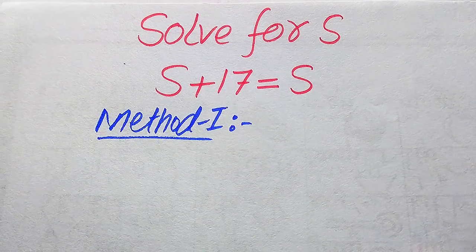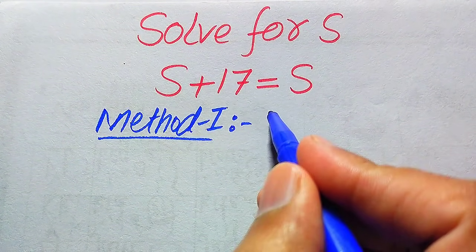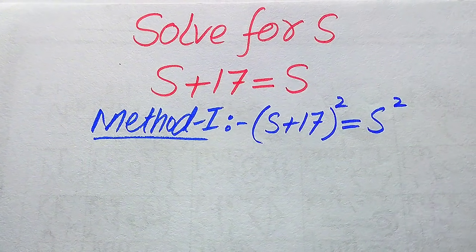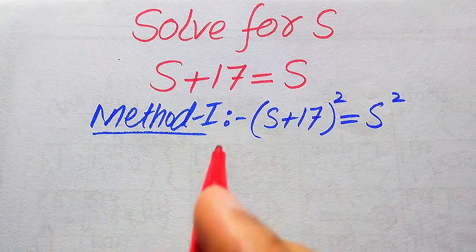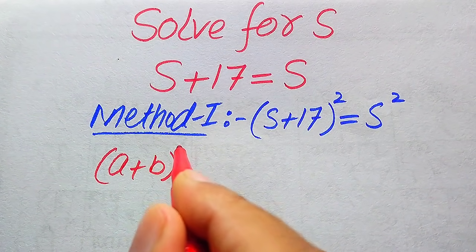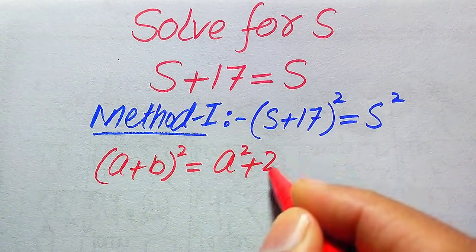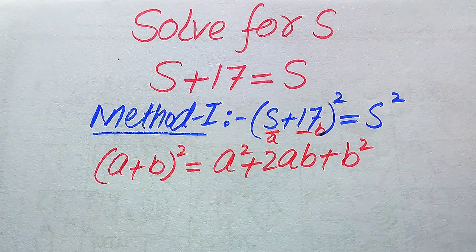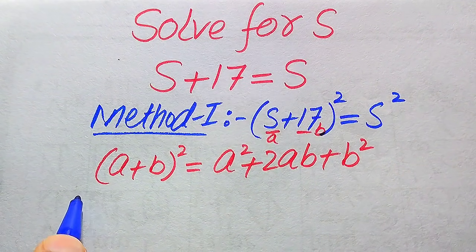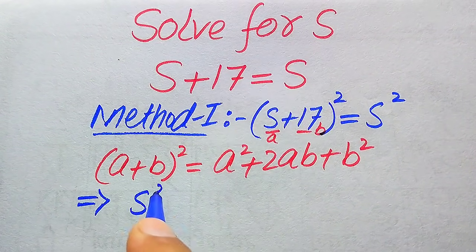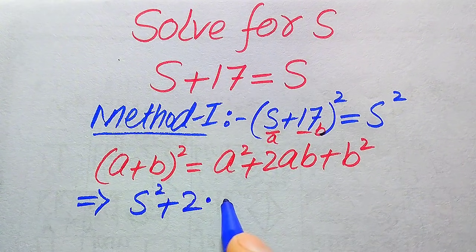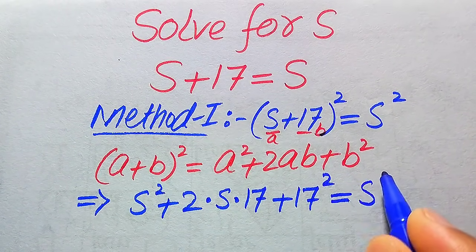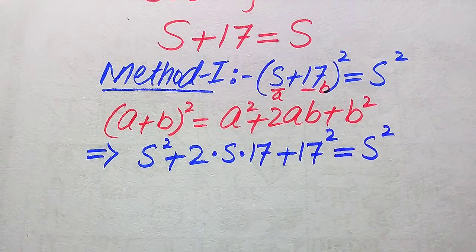Now we move towards the solution using the first method. The first thing we do is take squaring on both sides. When we apply squaring on both sides, we use the algebraic formula: (a + b)² = a² + 2ab + b². Here, a is s and b is 17. So the left-hand side becomes s² + 2(s)(17) + 17².